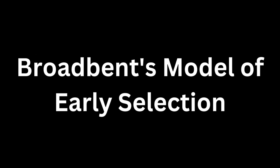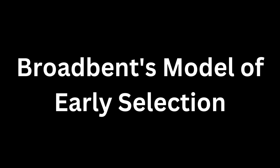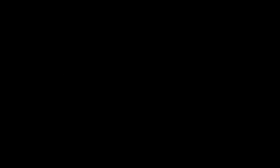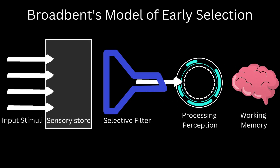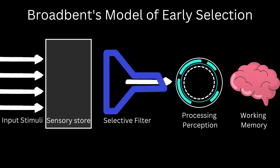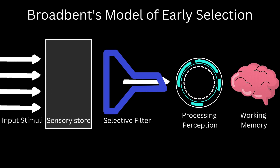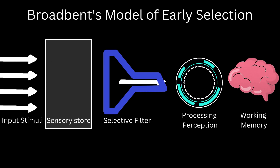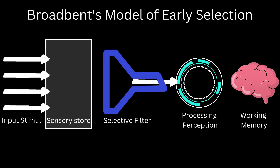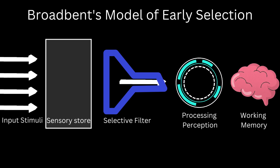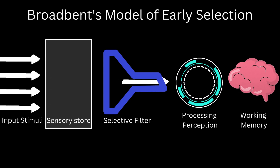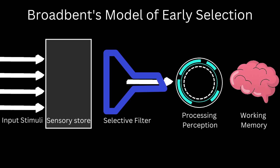The first theory that attempted to explain this phenomenon is the early selection theory. According to this theory, all the stimuli that enters our body is filtered by a selective filter which blocks all irrelevant stimuli and only allows the relevant stimuli to be perceived by our mind.